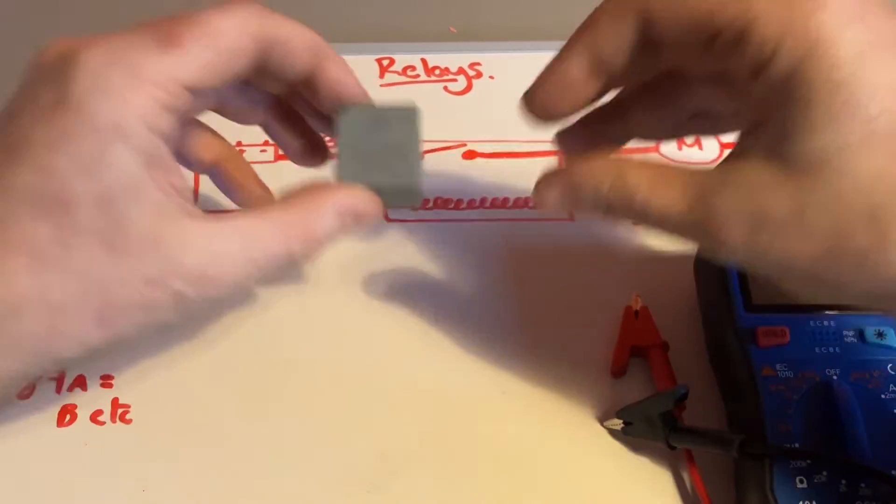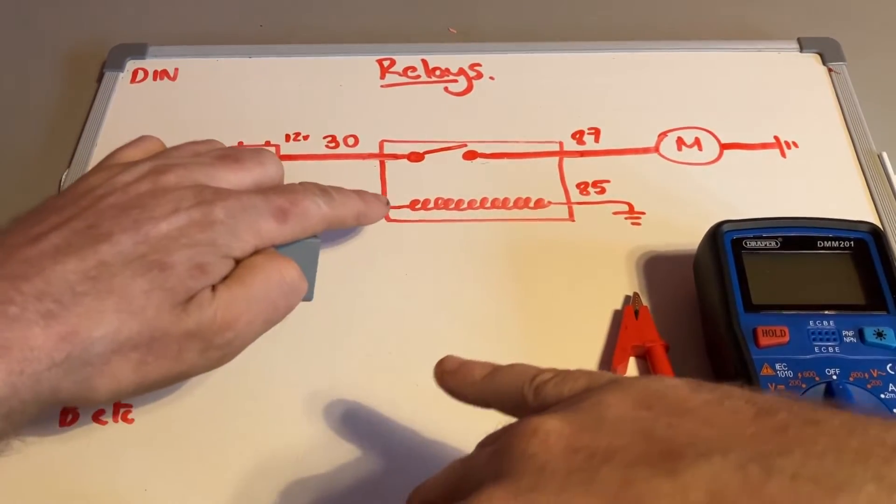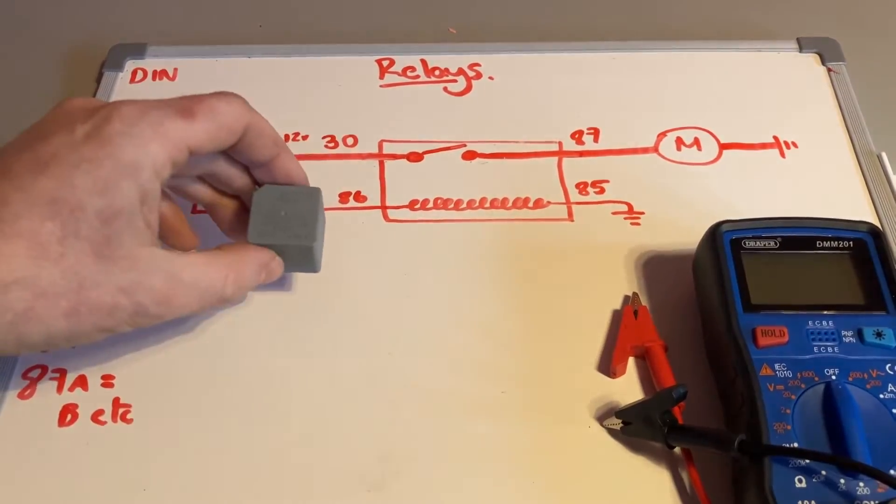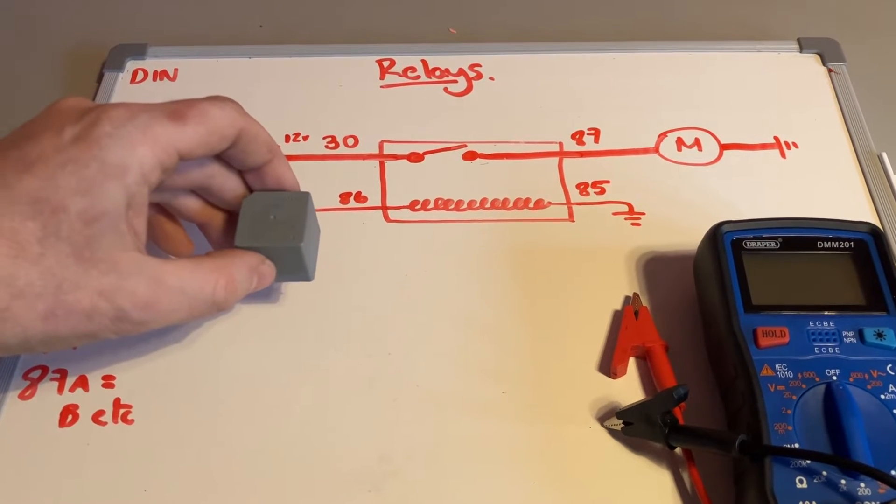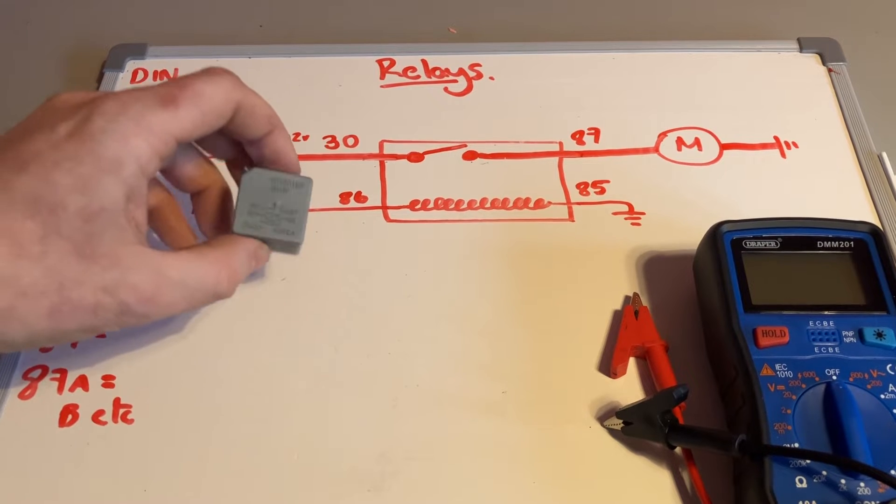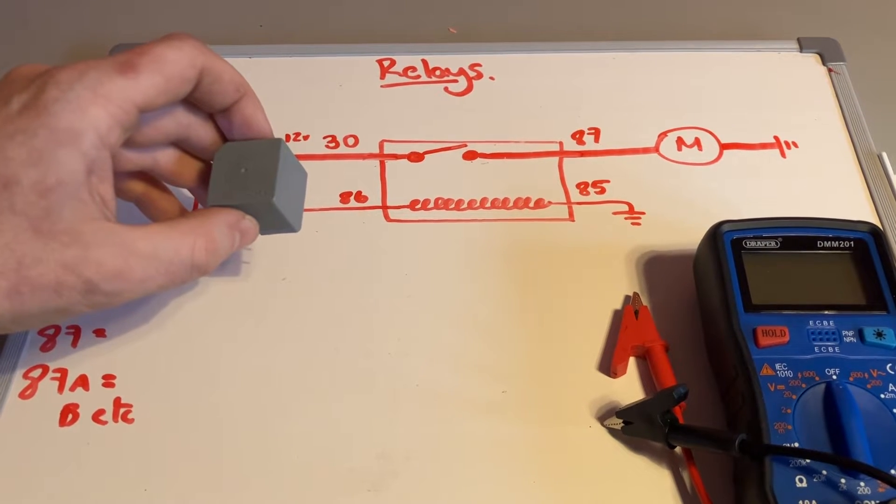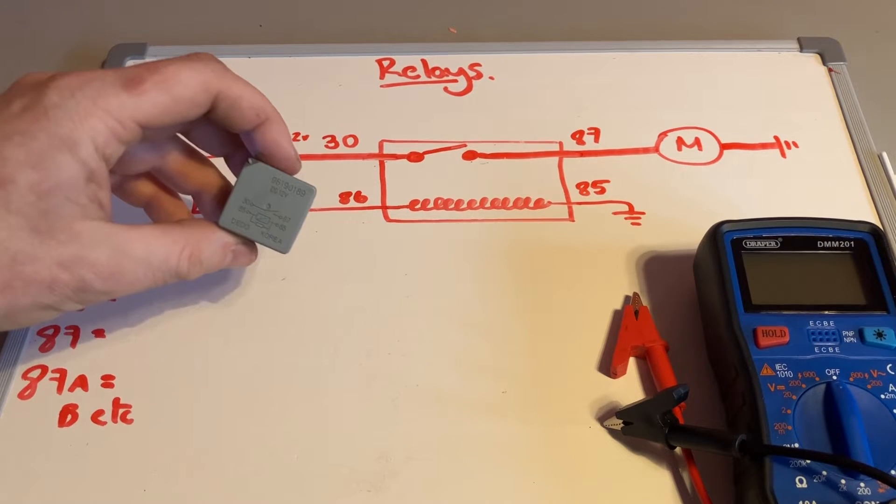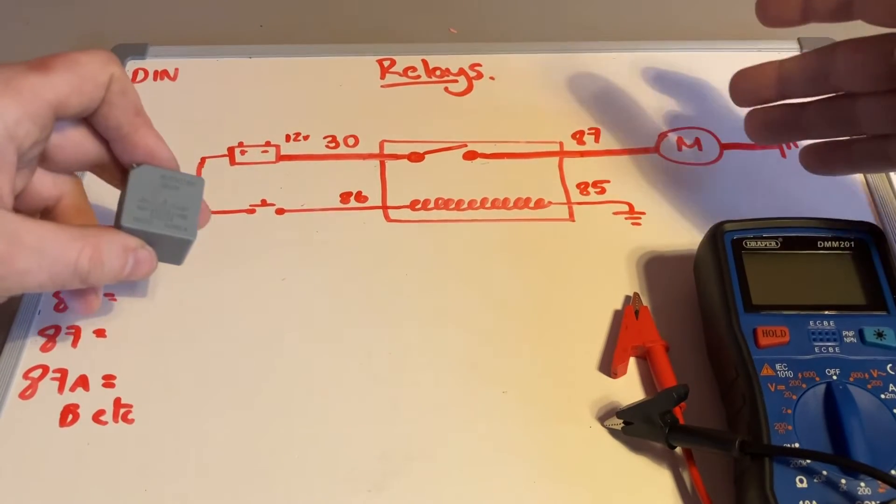So why do we test them? Well, sometimes these can fail internally - the coil can split, sometimes the switch can fail in an open or a closed position, which means that the circuit doesn't work. These are a common cause of what we call parasitic drains. So when your battery is going flat every day or few days, sometimes these do not turn off and therefore they continue to draw battery voltage.